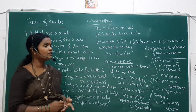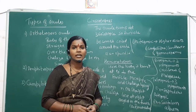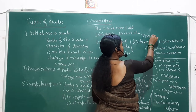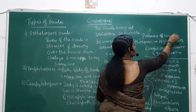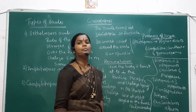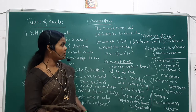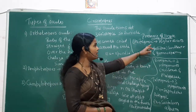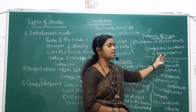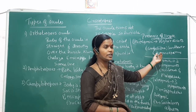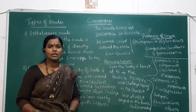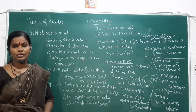Based on the integuments, we can classify the types of ovules. The first type is unitegmic, which means the presence of a single integument. Unitegmic ovules are normally seen in higher dicots, especially the sunflower family (Compositae), and also in gymnosperms.